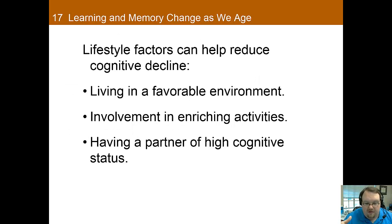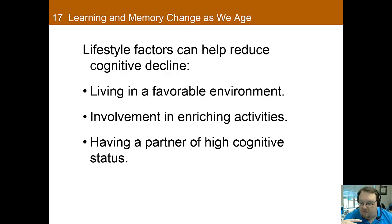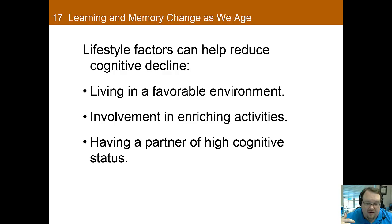Lifestyle factors can also be protective against cognitive decline. Exercise has been shown to help prevent cognitive decline and dementia, as does living in a favorable environment — meaning one with adequate nutrition and an environment that's cognitively challenging. Having a lot of education, or having a partner of high cognitive status, can be very helpful because it helps challenge you and keep your mind active. This is essentially part of the reason why you see older professors who are still as sharp as they've ever been — because they're still using their brain. So they're not losing it because they're using it.